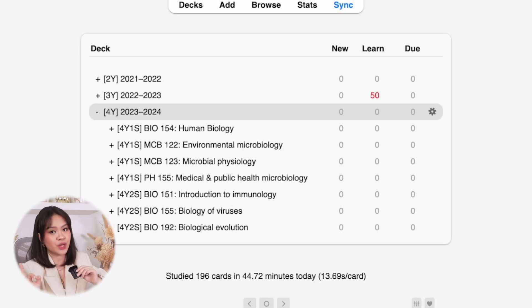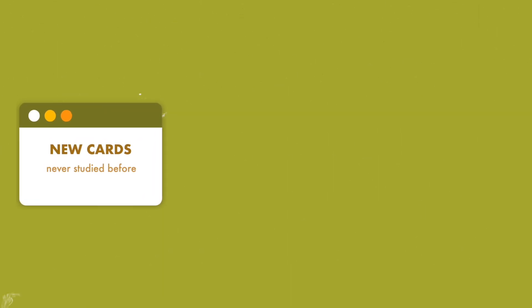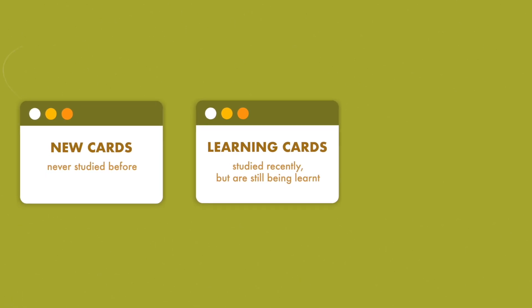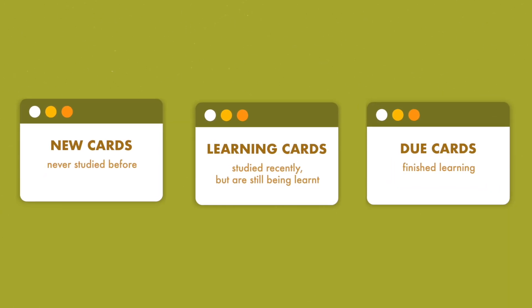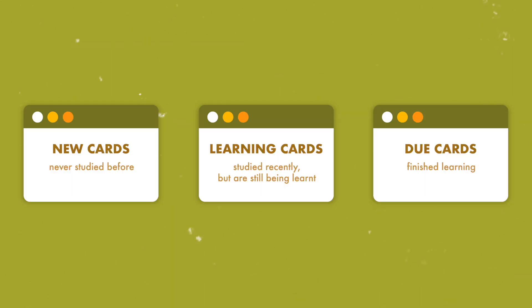Beside these decks you can see three states for your cards: New, Learning, and Due. This basically shows you how many cards are new, learning, and due for a specific review day. New cards are those you haven't studied at all. Learning cards are those you've studied recently but are still in the process of being learned. Due cards are those you've finished learning. Now if you finish learning these cards, why are they still classified as Due — why do you still need to review them?